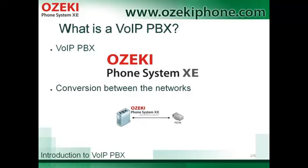Because the two types of network use different signals, there is a need for conversion between the two networks. It means that if you use an IP phone and you call a traditional phone, first your voice runs through the IP network as a digital signal and then it will be converted into an analog signal.